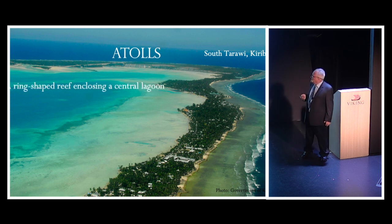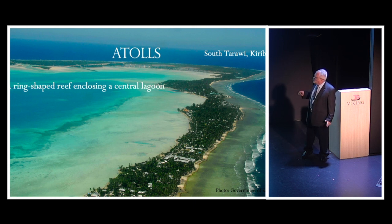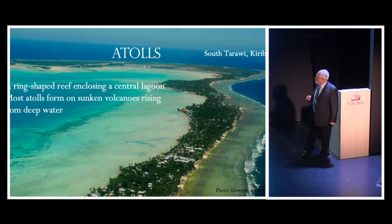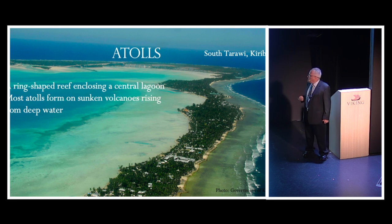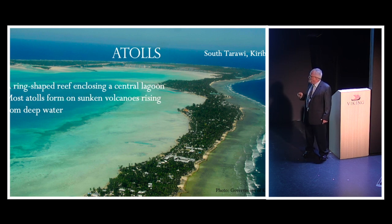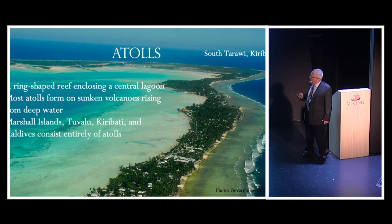An atoll is a ring-shaped reef surrounding a central lagoon. Most atolls, Darwin believed, formed on sunken volcanoes — though that has just recently been questioned. The word 'atoll' actually comes from the Maldivian word 'atollhu,' meaning a lagoon island.